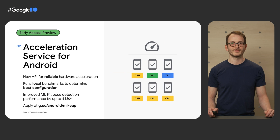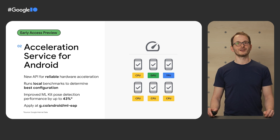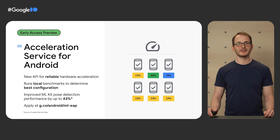Now comes my favorite part: performance and hardware acceleration. Mobile devices nowadays are armed with powerful chips that can provide up to 10x latency improvement for ML inference. However, it has been hard to benefit from these capabilities due to variations in runtime latency, stability, and even accuracy across different devices and driver versions. I'm excited to announce Acceleration Service, a new API that will dramatically improve the experience for you. This API uses a technology called Local Benchmarking that helps determine the optimal hardware on which to run ML inference safely at runtime. This technology is already used for pose detection in ML Kit, where it helped make it up to 43% faster. Acceleration Service is currently in early access preview, and you can apply by following the link below.